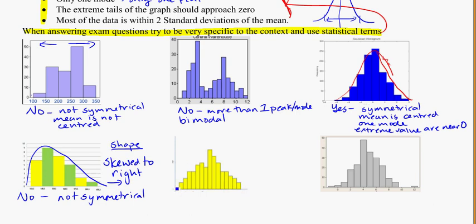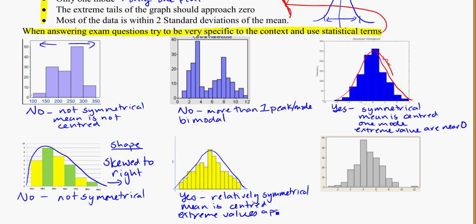If I look at this one, one way to kind of think about that is can you sort of draw a normal curve? And this one's not great, but I would say it's pretty good. So yes, relatively symmetrical. Mean is centered. And extreme values approach zero.